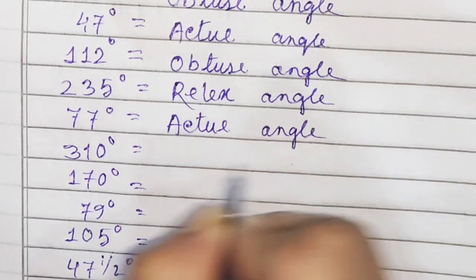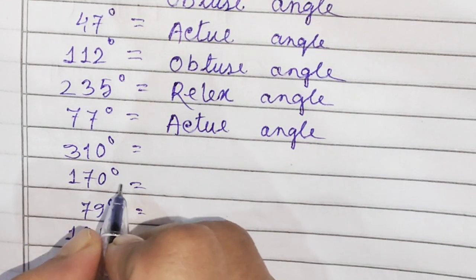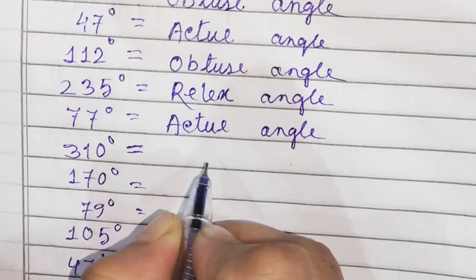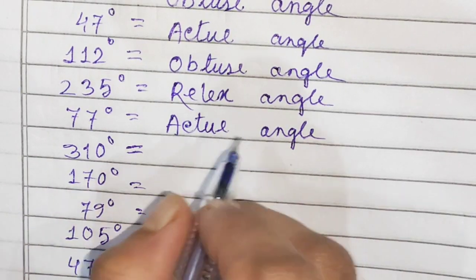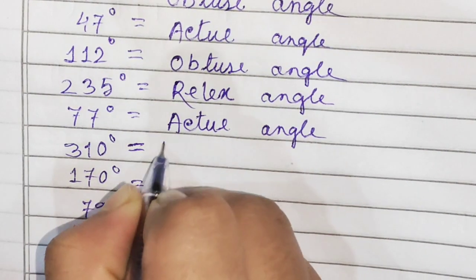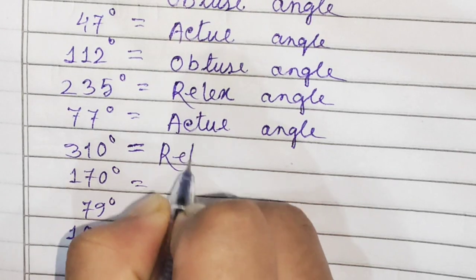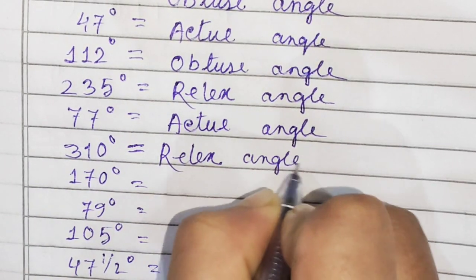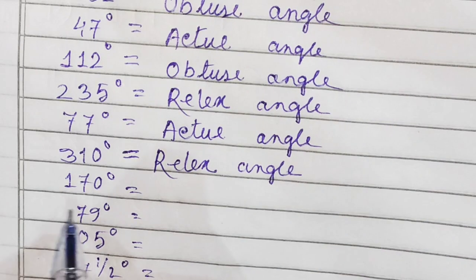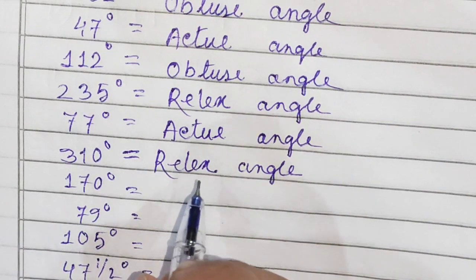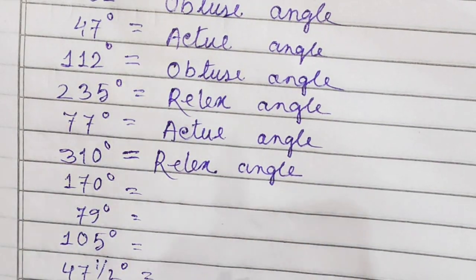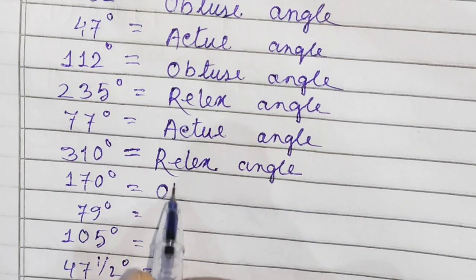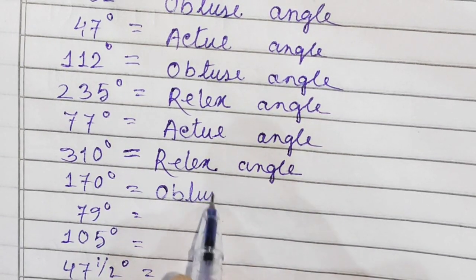Next: 77 degrees — since 77 degrees is less than 90 degrees, it is an acute angle. Next: 310 degrees — since 310 is between 180 and 360, it is a reflex angle. Next: 170 degrees — since 170 is between 90 and 180, it is an obtuse angle.